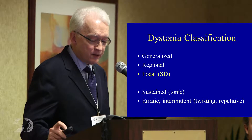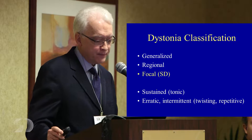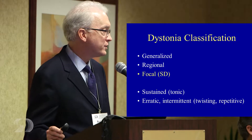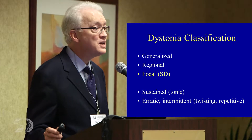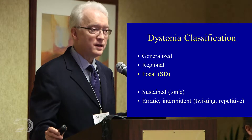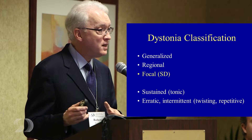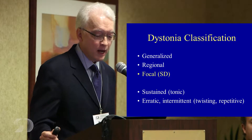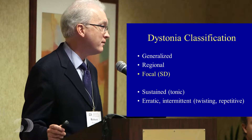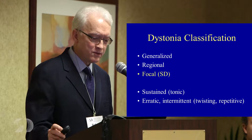Looking at the broader classification, there are two varieties useful to distinguish because they are the source of a lot of misdiagnosis: the tonic variant of SD, which is more of the sustained kind of muscle contraction, versus the erratic and intermittent form, which is the more classic spasmodic dysphonia. It's useful to keep those kinds of things in mind.